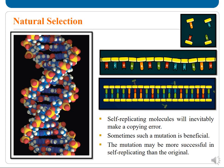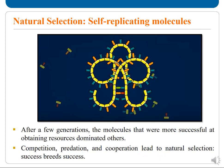Self-replicating molecules formed from DNA will inevitably make a copying error. Sometimes such a copying error, called a mutation, is beneficial. The mutation may be more successful at self-replicating than the original. After a few generations, molecules that were more successful at obtaining resources dominated others. Competition, predation, and cooperation led to natural selection.